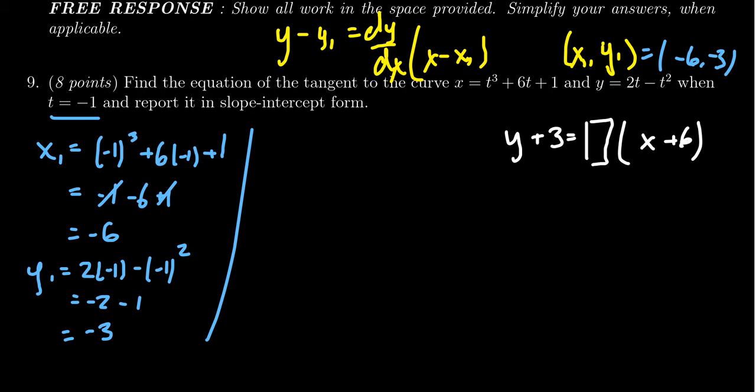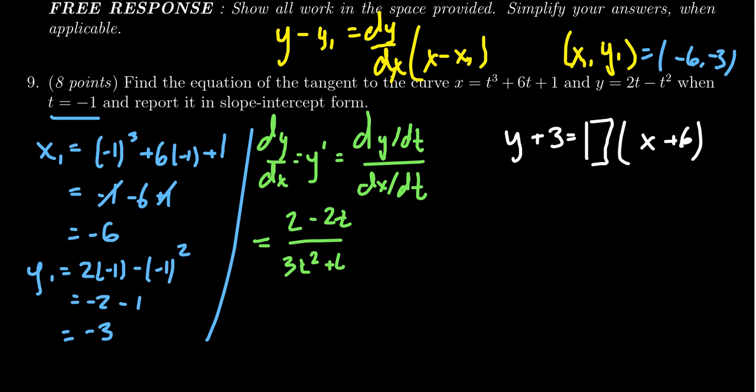And so that then brings us to the derivative calculation dy dx, which we often abbreviate as y prime. For a parametric curve this is calculated as dy over dt divided by dx over dt. So we calculate the derivative of y and x with respect to t and take their ratios. The derivative of y with respect to t just by the usual power rule will be 2 minus 2t. The derivative of x by the power rule with respect to t would be 3t squared plus 6.